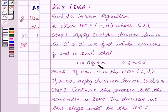we get Q as the quotient and R as the remainder, where R is always greater than or equal to 0 but always less than D. If R equals 0, this implies that D is the HCF of C and D. But if R is not equal to 0, then